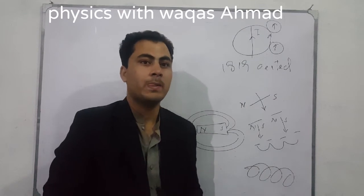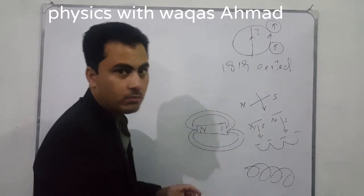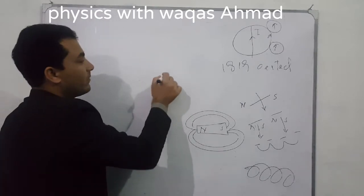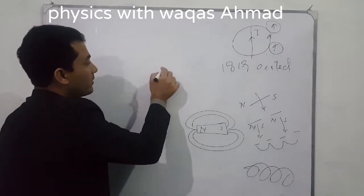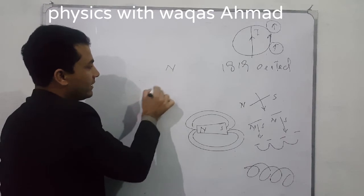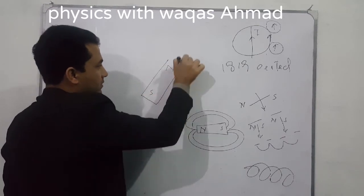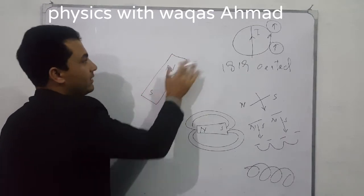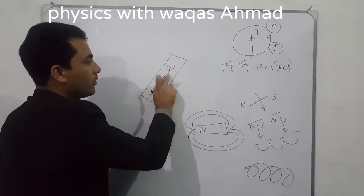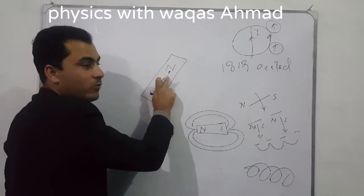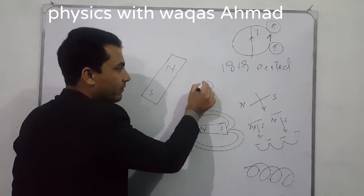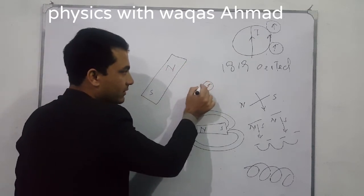Ferromagnetic materials are that class of magnetic material which are strongly attracted by a magnet. Now, what is a magnetic field? Magnetic field is basically the space or region around a magnet where its magnetic influence can be felt by another magnet.